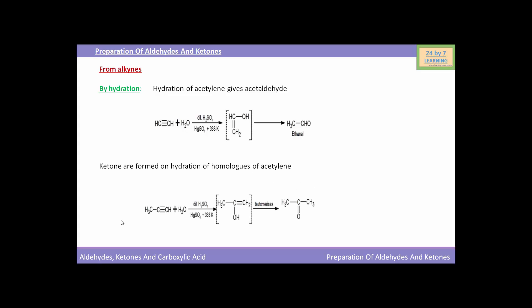Ketones are formed on hydration of homologues of acetylene. CH3C triple bond CH, the homologue of acetylene, when hydrolyzed in presence of dilute sulphuric acid and mercuric sulphate at 333 Kelvin temperature, forms an intermediate secondary alcohol which on tautomerization forms ketone. This was the preparation of aldehydes and ketones from alkenes and alkynes.